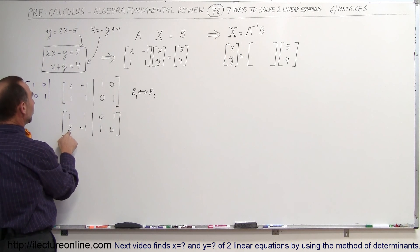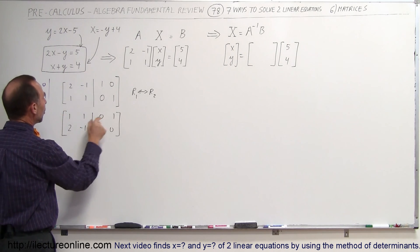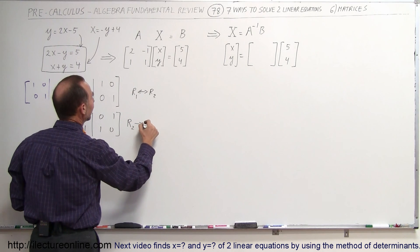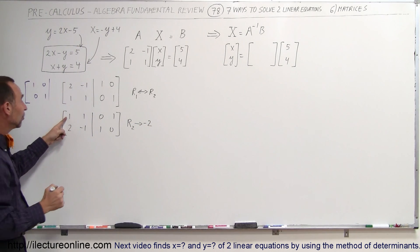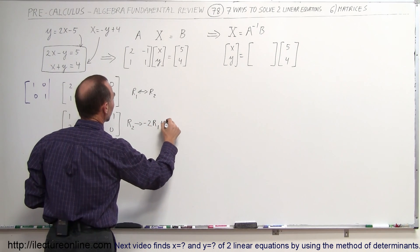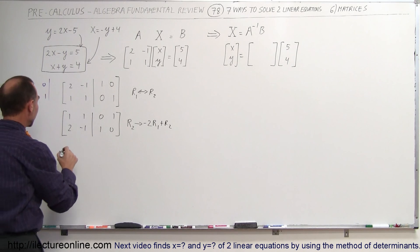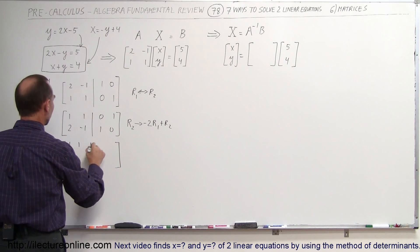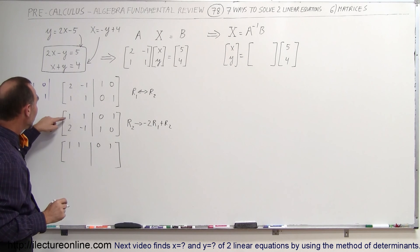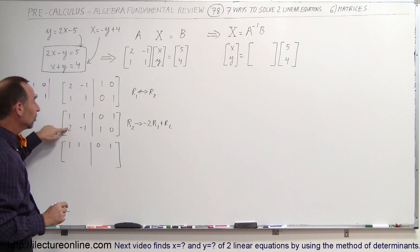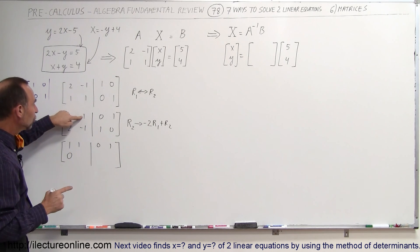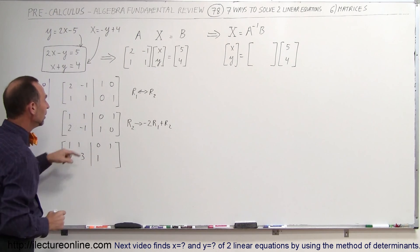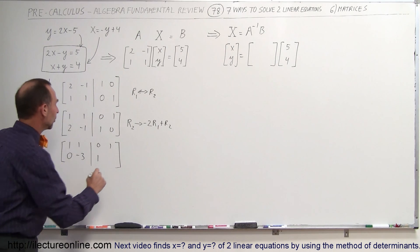Now we want to turn the 2 into a 0. We do that by multiplying the top row by negative 2 and adding it to the bottom row. The first row stays unchanged at 1, 1, 0, 1. For the bottom row: negative 2 times 1 plus 2 equals 0; negative 2 times 1 plus negative 1 equals negative 3; negative 2 times 0 plus 1 equals 1; negative 2 times 1 plus 0 equals negative 2.